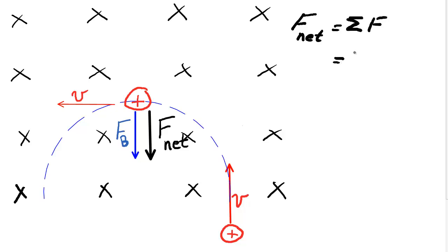Since the only force that's acting on it is the magnetic force, we say that F net is FB. And as usual, F net is MA. However, because our acceleration is centripetal, we're going to write this as MAC.